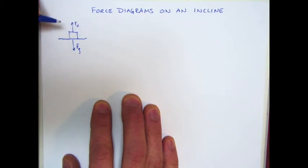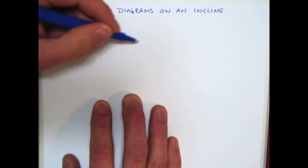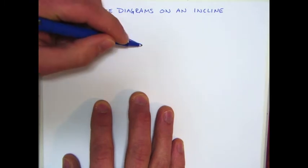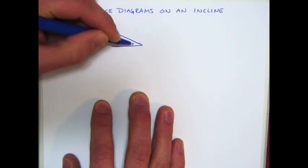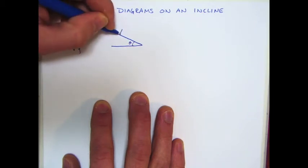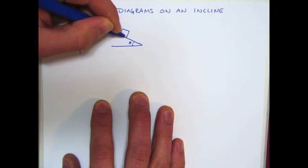Today we're going to talk about how you do a force diagram when your object is not on a flat surface but rather it's on an incline. So let's draw an incline and we're going to say that this incline is angled at some angle theta. And I'm going to take my box and put it on the incline.